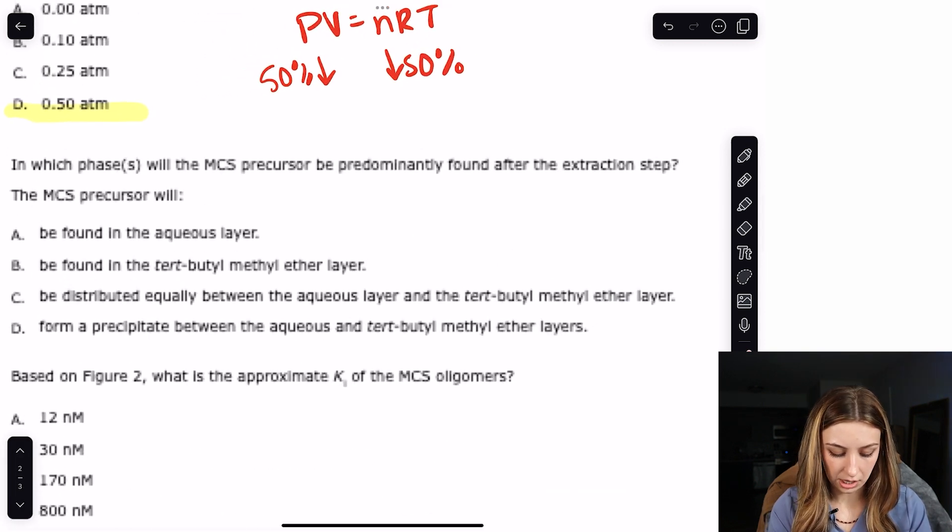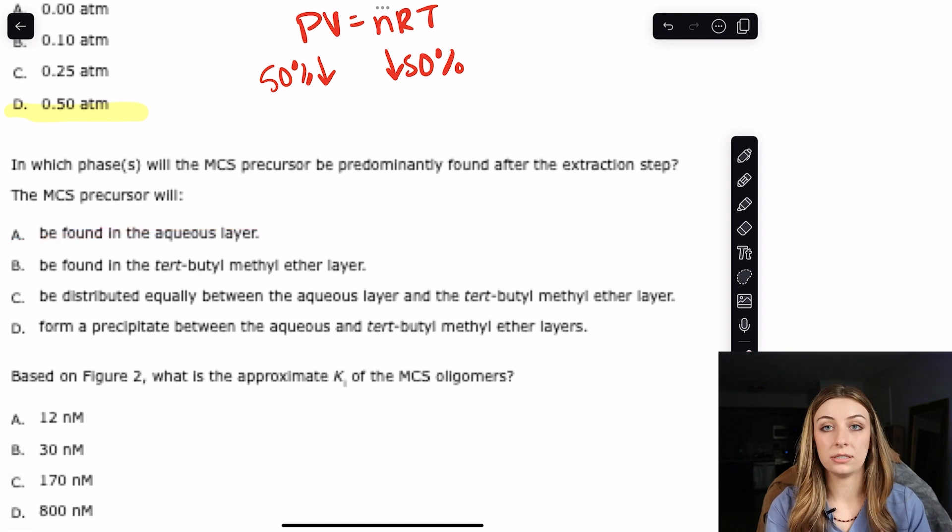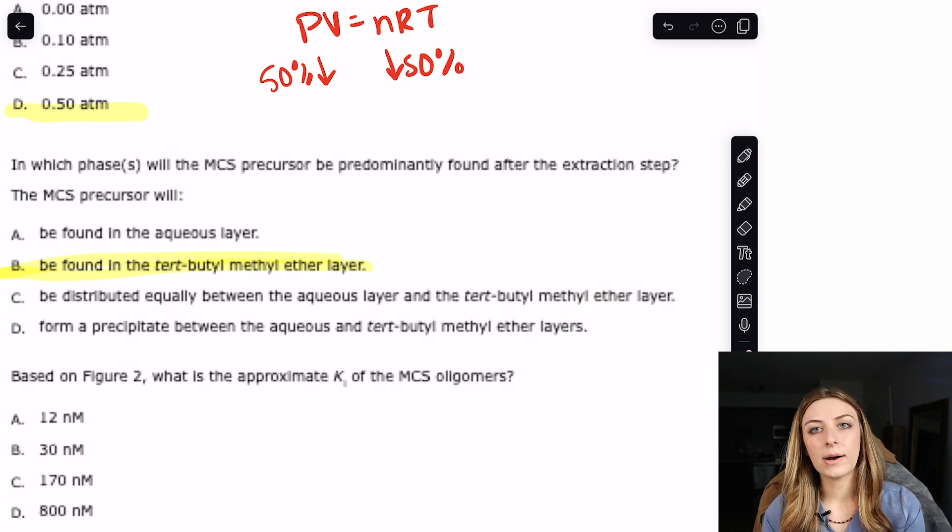This is something that you should just know. Put it on a flashcard. Ethers are hydrophobic, lipophilic, whatever you want to say. Regardless, it's not going to go in the aqueous. So let's go down to the answer choices. Is it going to be found in the aqueous layer? No, it's lipophilic. It's going to be found in the tert-butyl methyl ether layer? Yes, ethers are lipophilic. It's not going to be distributed equally between the aqueous and the methyl ether. If you know that ether is lipophilic and like dissolves like, then you would not want to pick precipitate either. So you would go towards B.